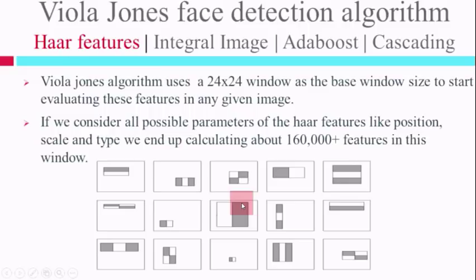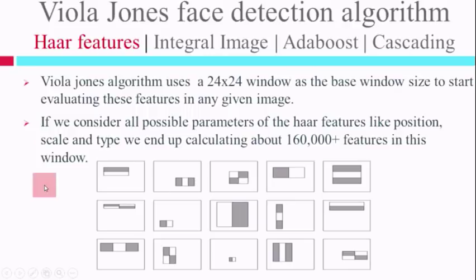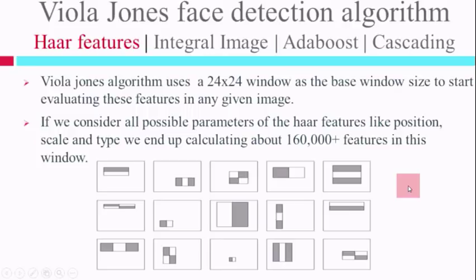Every single time, I need to sum up all the pixels in the black region and then in the white region. Calculating these sums is not computationally efficient for real-time operation, especially for thousands of features. Viola-Jones came up with a trick called the integral image. The basic idea is: to calculate the area of a patch, we do not need to sum up all the pixels. Instead, we use the corner values of the patch and do a simple calculation.